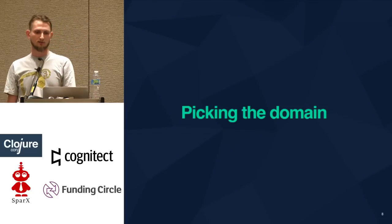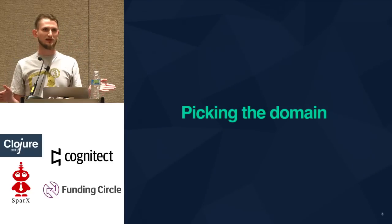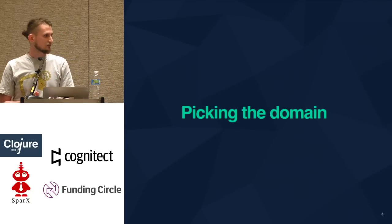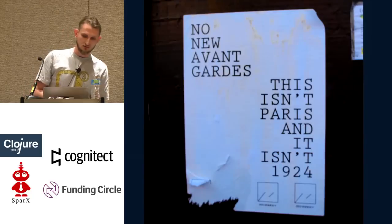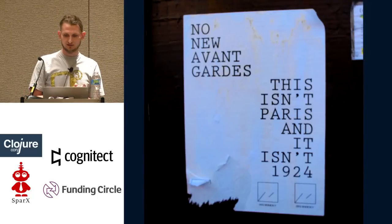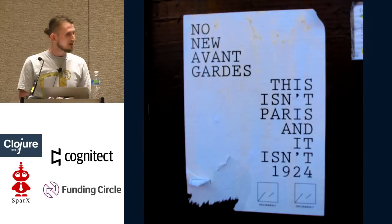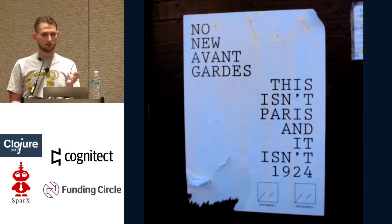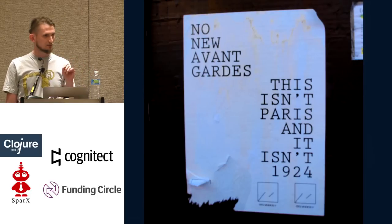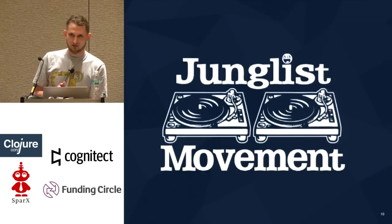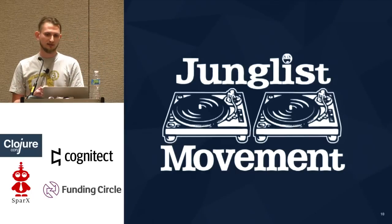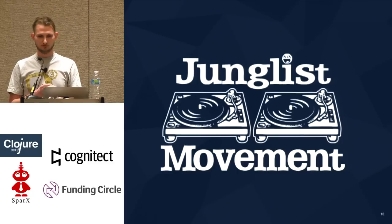As you can probably imagine, I did not build a universal music-making machine with spec. Instead, I wanted to focus on one particular kind of music. I resisted the temptation to do something avant-garde, because it's not Paris and it's definitely not 1924. Instead, I decided to pick a genre which I think is quite simple to describe and has a defined canon, and is also close to my heart. That music is jungle — a flavor of drum and bass with a certain twist.